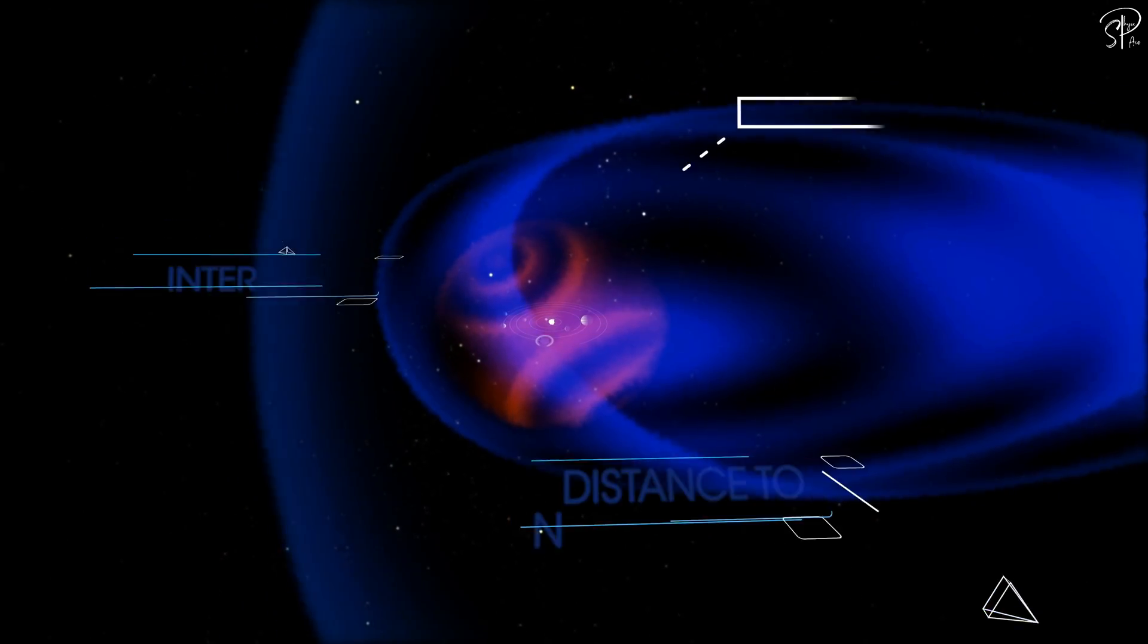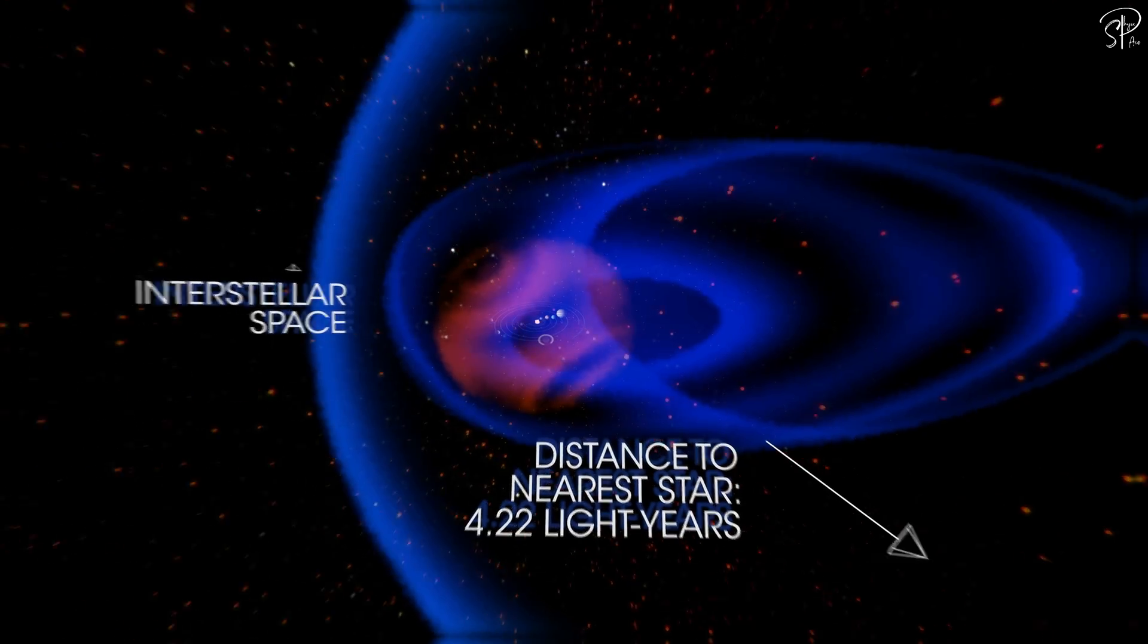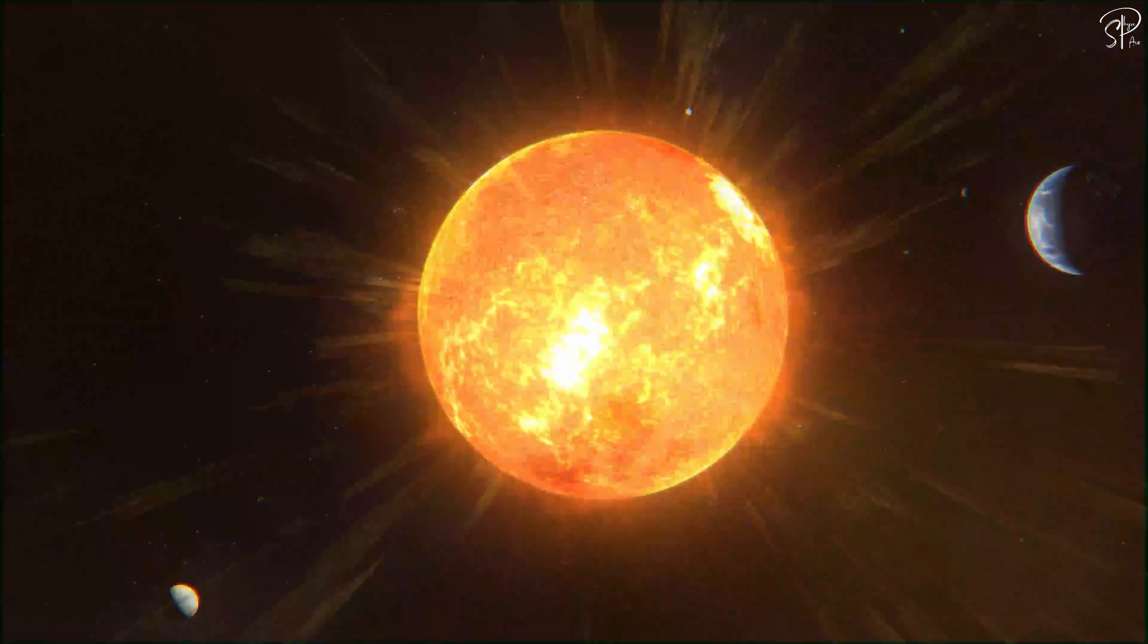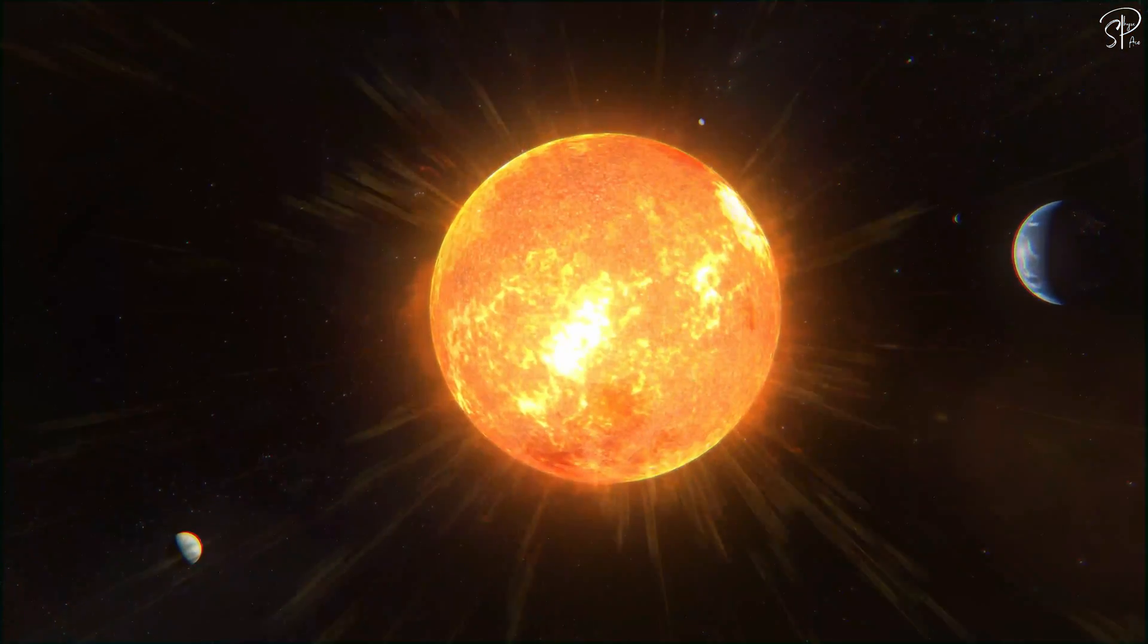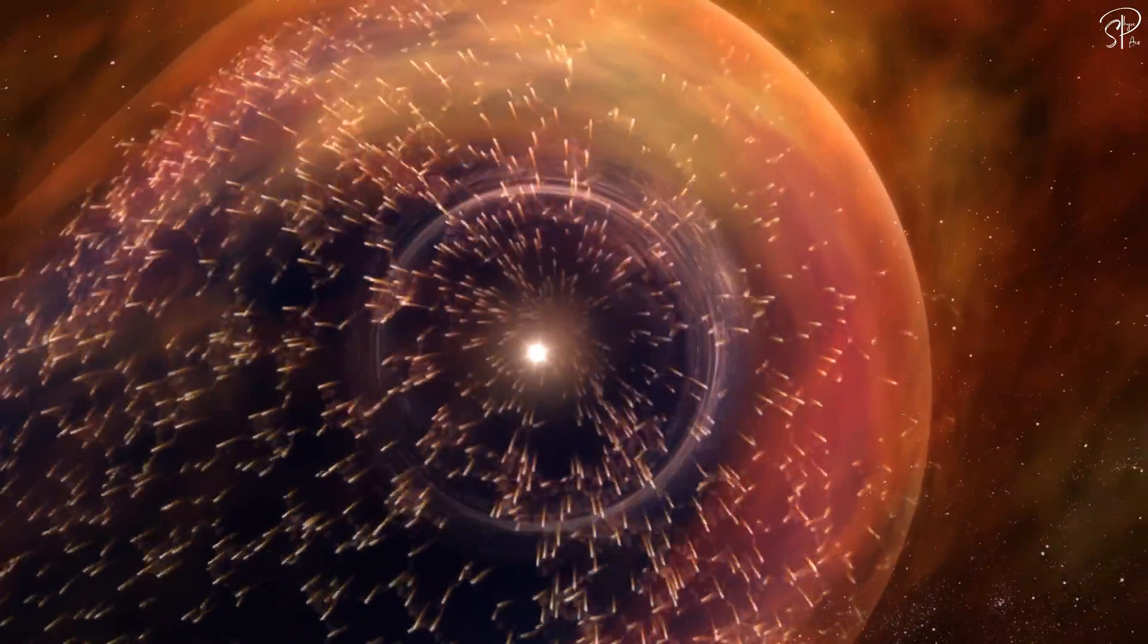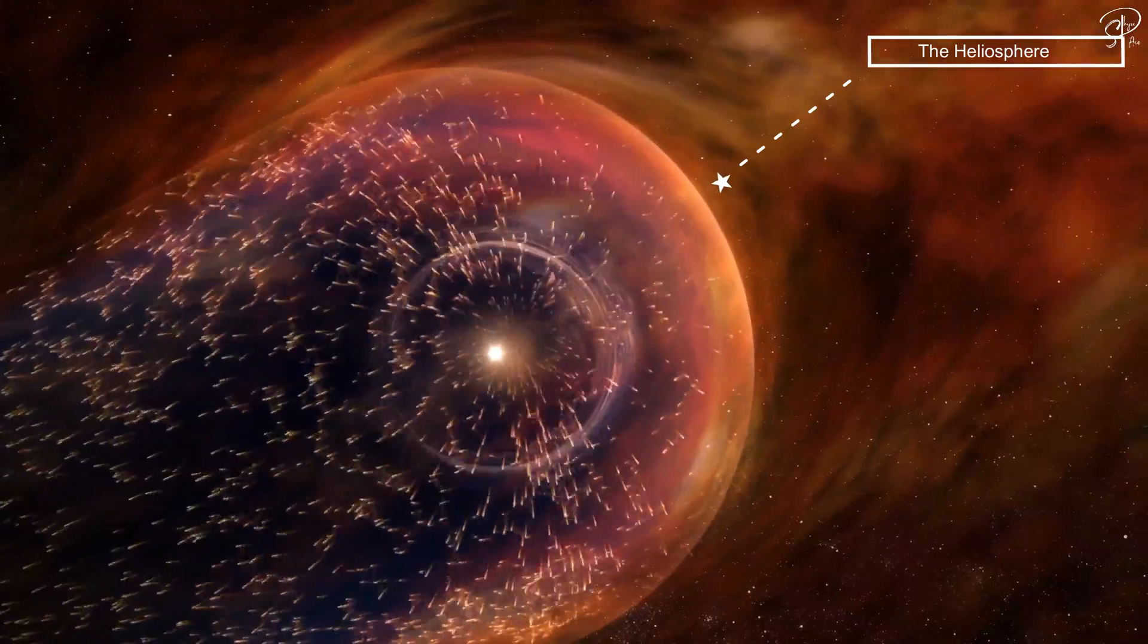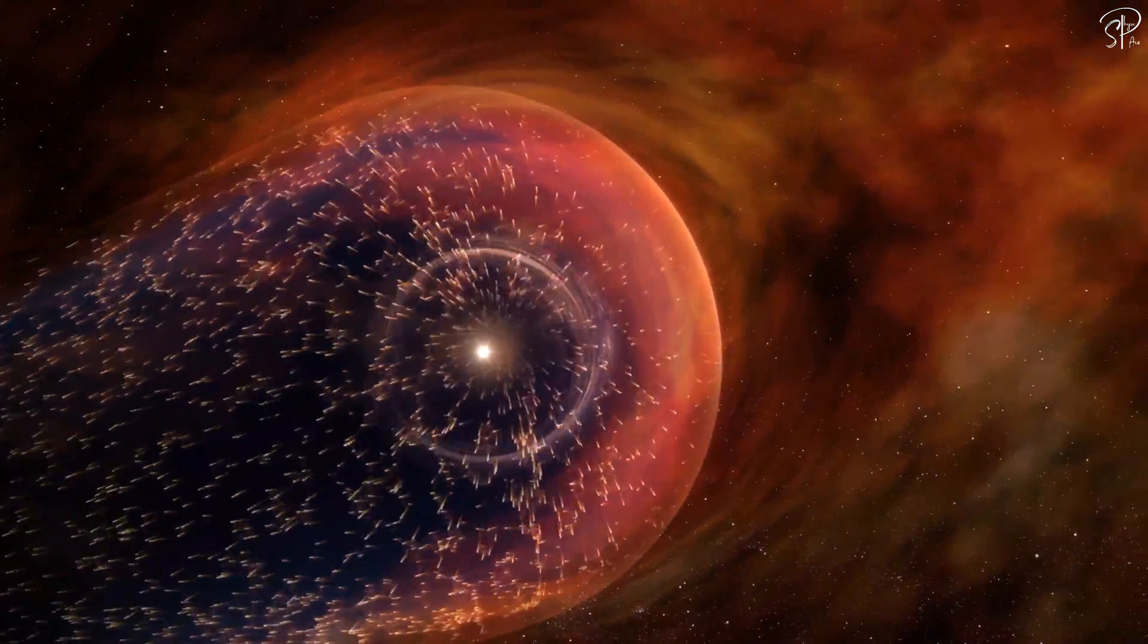This is a boundary that is called the heliopause. As the name suggests, something stops there. On it, the speed of solar wind, the flow of charged particles emitted by the sun, or in other words, solar plasma, drops to zero. And the area between the sun and the heliopause is called the heliosphere. This is kind of a bubble in which all the planets of the solar system are immersed. But how did this bubble appear here?